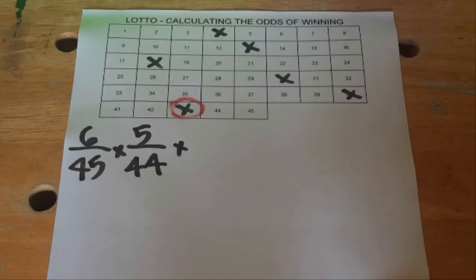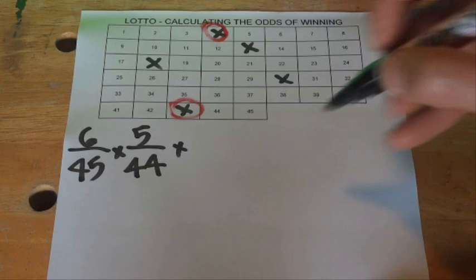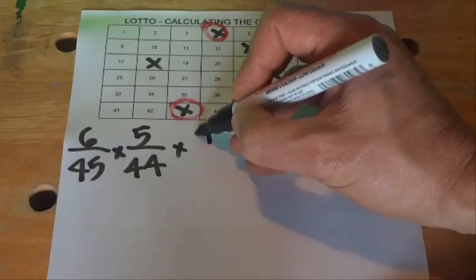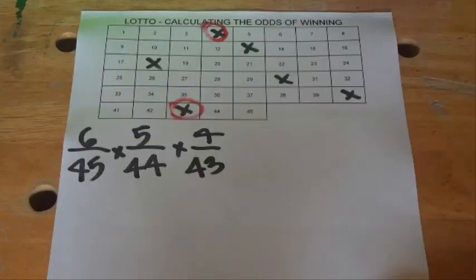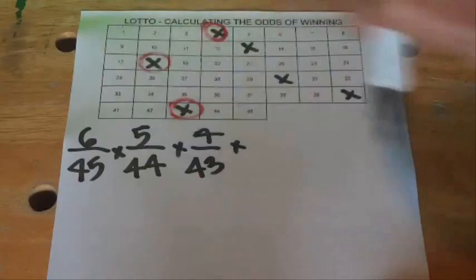I'll mark off one of those selections. When the third ball drops, we've got four chances left out of 43 because two balls have already been selected. That's four chances in 43 of the third ball being one of our numbers selected on our grid.